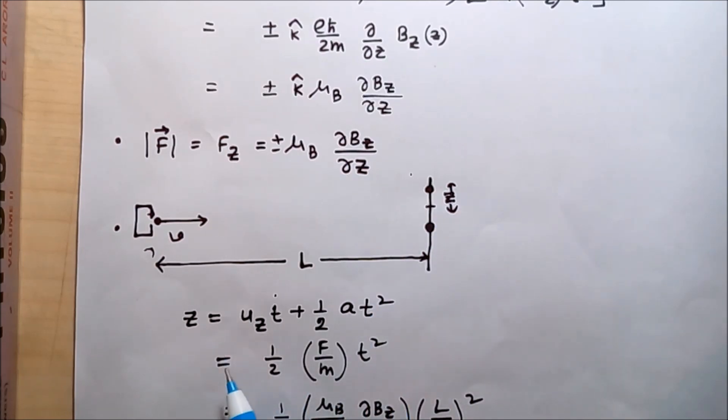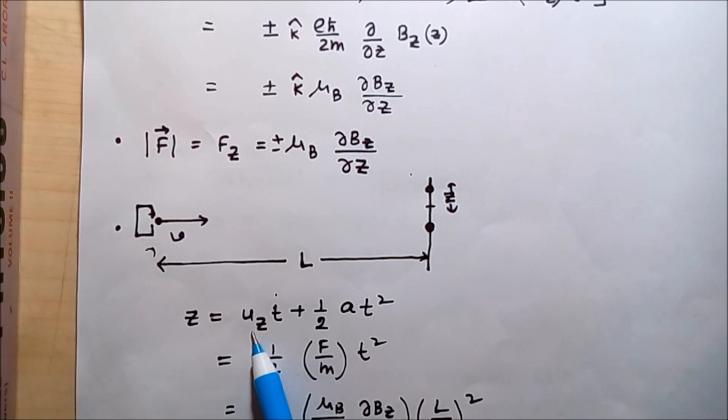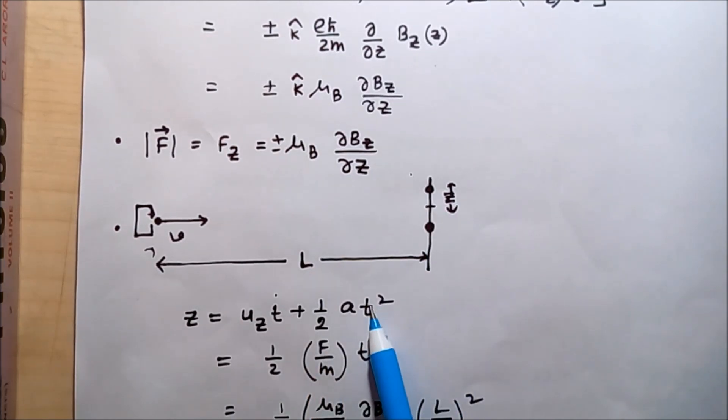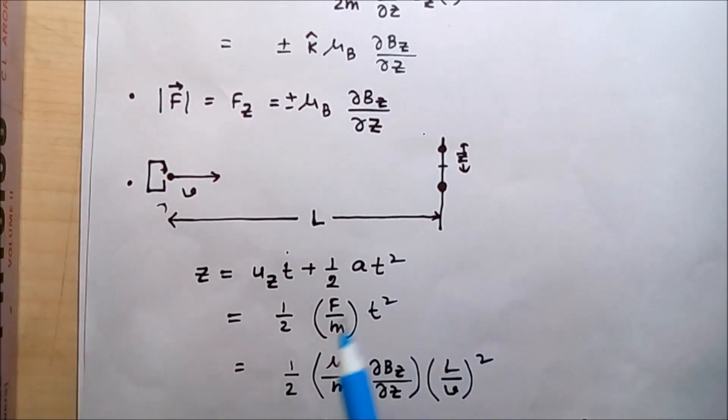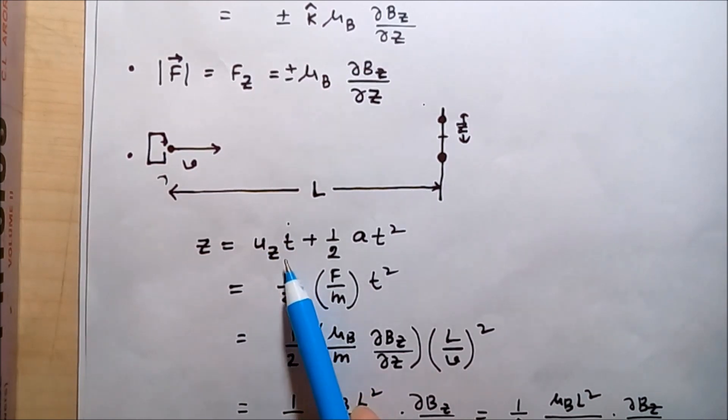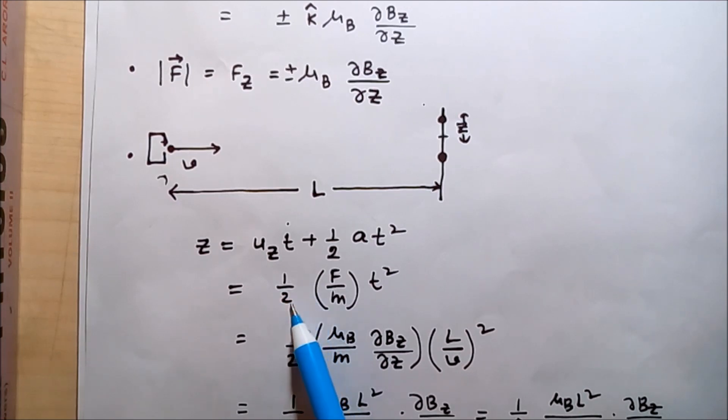The deflection can be written as the initial velocity in the Z direction times the time plus half times the acceleration due to this force times t squared. We assume the initial velocity along the Z direction to be zero, so the deflection equals half times, according to Newton's second law, F by m times t squared.